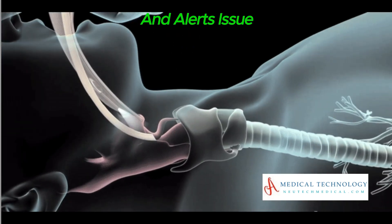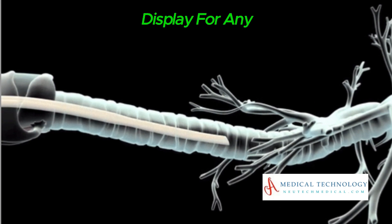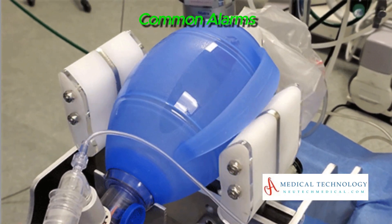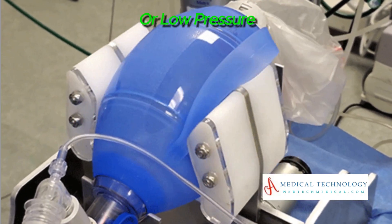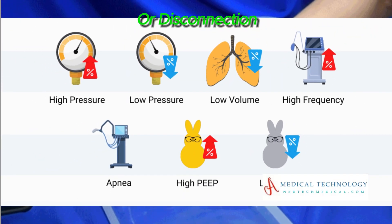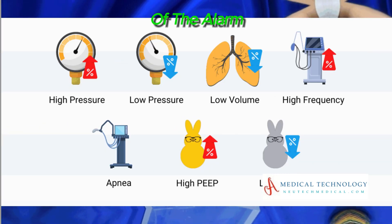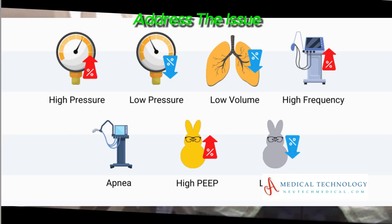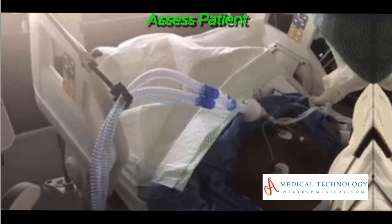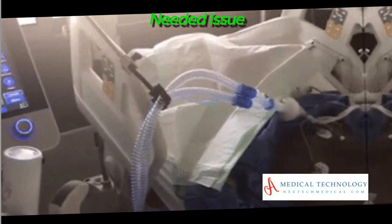Alarms and Alerts — Check the ventilator display for any alarms or alerts. Common alarms include high or low pressure, low tidal volume, or disconnection. Troubleshooting: Identify the cause of the alarm and address the issue. For example, check connections, assess patient condition, and reset the alarm as needed.